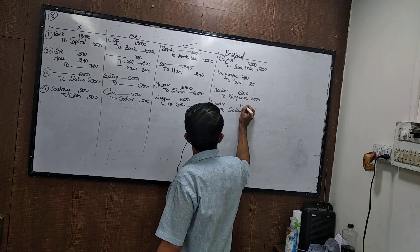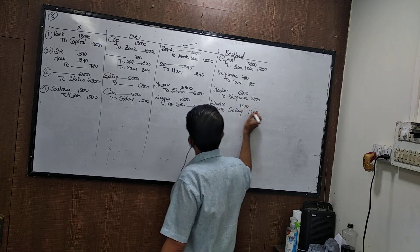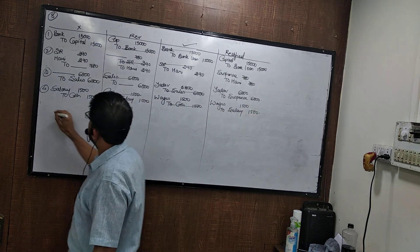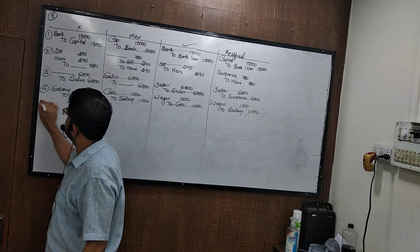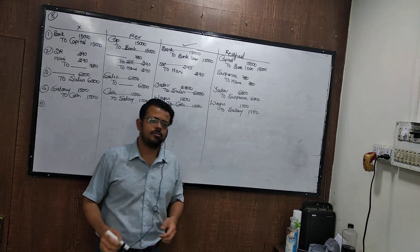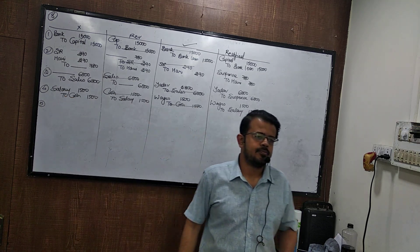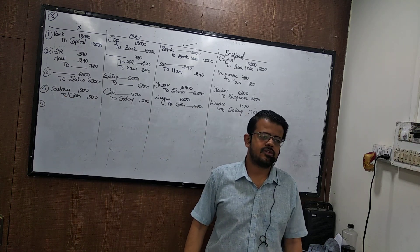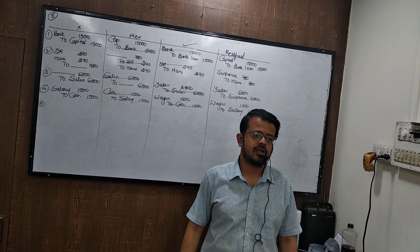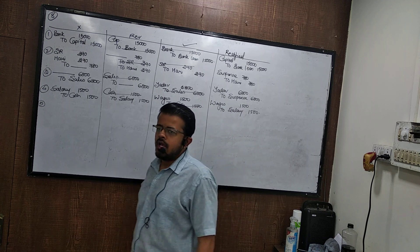Third one: rent paid to landlord Dilip was debited to his personal account. The correct entry for paying rent is rent to cash. Wrong entry is Dilip to cash. Reverse is cash to Dilip, and rectified is rent to Dilip.